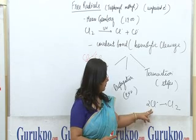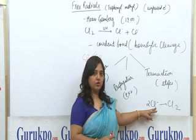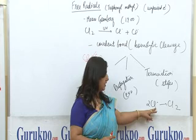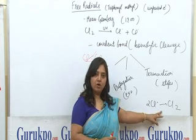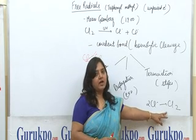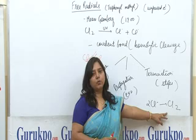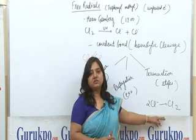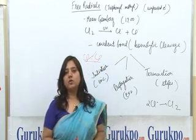For example, two chlorine free radicals combine together, form a bond between them, and hence form a molecule of chlorine, eliminating the free radicals. Thank you very much.